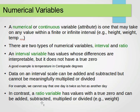In contrast, a ratio variable has values with a true zero and can be added, subtracted, multiplied, or divided, like for example the weight, which usually takes real values.